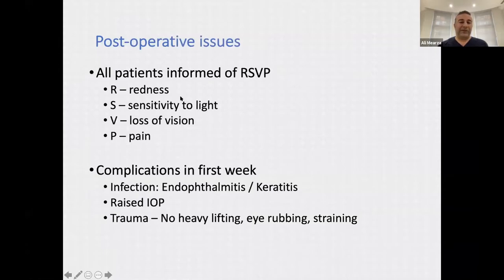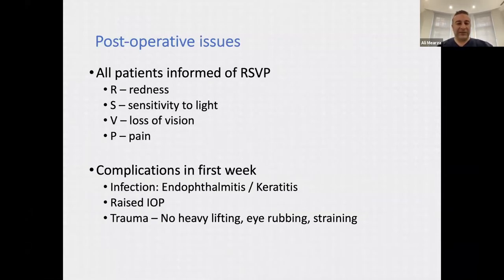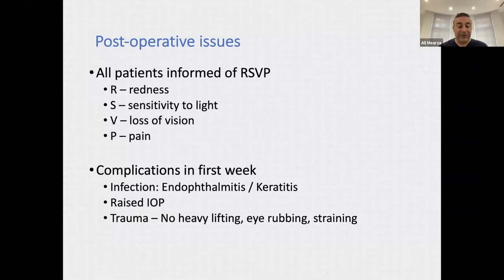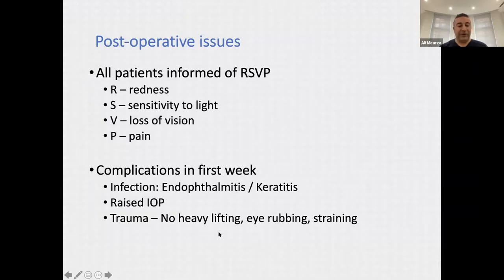All patients are informed of the RSVP acronym for postoperative warning signs: R for redness, S for sensitivity to light, V for loss of vision, and P for pain. In the first week, watch out for infection, endophthalmitis, and keratitis. Raised intraocular pressure can explain an ache behind the eye. We always advise no heavy lifting, avoid eye rubbing and straining, especially in the first week.